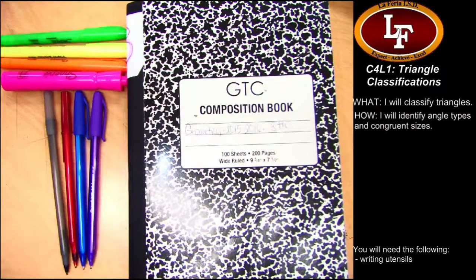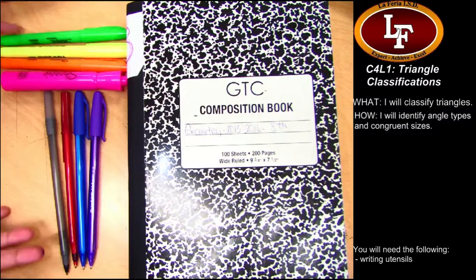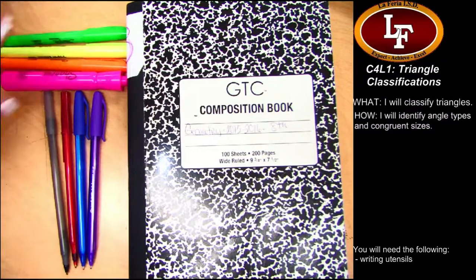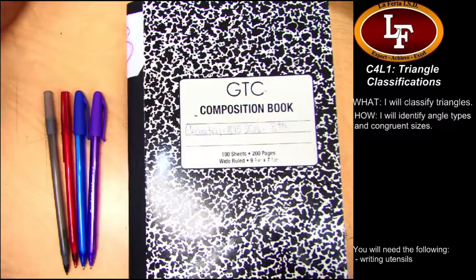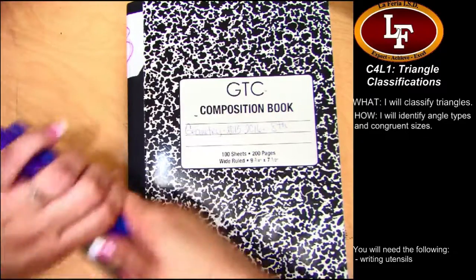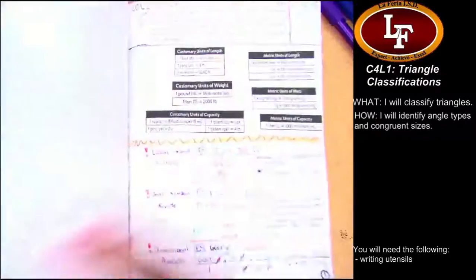My daughter is here guest starring with me again today. We are going to be working on Chapter 4, Lesson 1, Triangle Classifications. You will need various writing utensils. You're going to see me using a lot of different colors today and different color highlighters. This is just to organize, so if you're not a very colorful person, that's okay, don't feel bad.